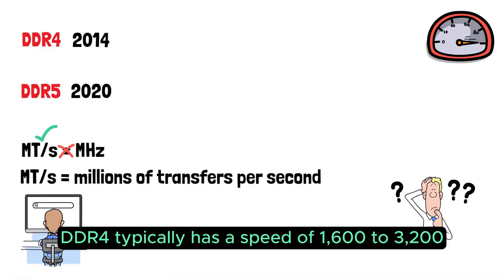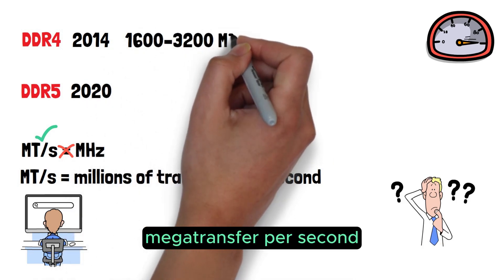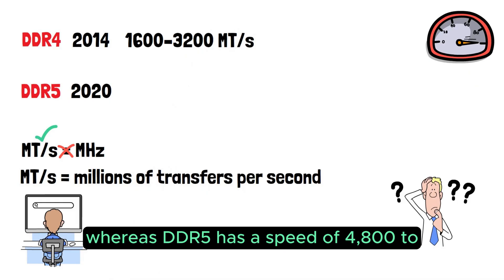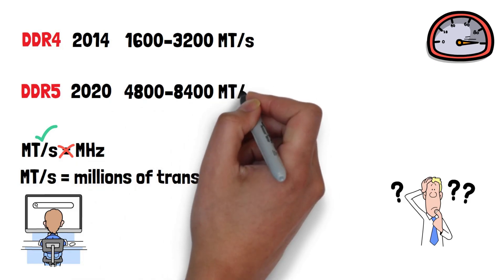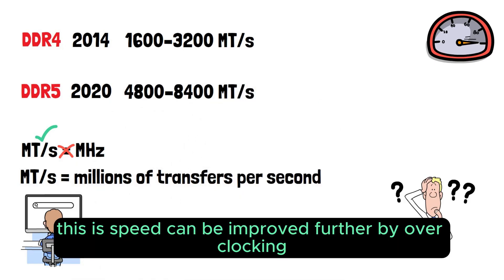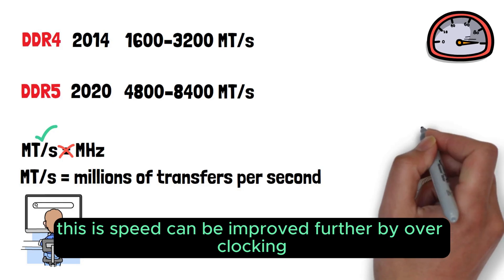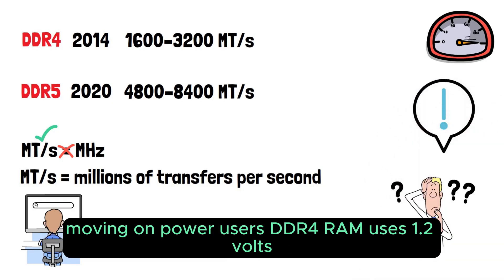DDR4 typically has a speed of 1600 to 3200 MT/s, whereas DDR5 has a speed of 4800 to 8400 MT/s, so it's clearly faster than DDR4. This speed can be improved further by overclocking, but you can void your warranty by doing this.